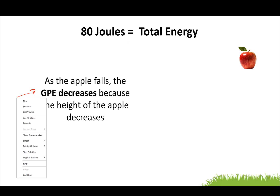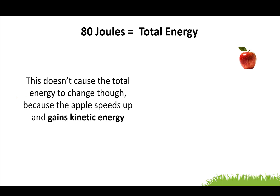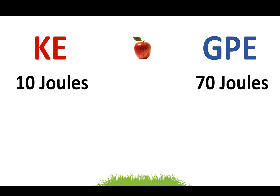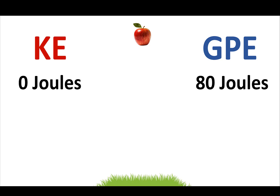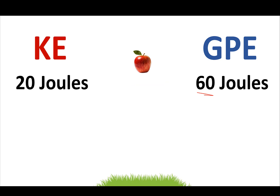As the apple falls, the gravitational potential energy goes down because the height decreases, but the apple speeds up and gains kinetic energy, so KE goes up. At the very top, all the energy is gravitational because it is not moving. As it falls, the height goes down and the speed goes up. The decrease in gravitational energy exactly counteracts the increase in kinetic energy. So with 80 total joules, every loss of gravitational energy is exactly countered by a gain in kinetic energy — the total remains 80 joules the entire time.